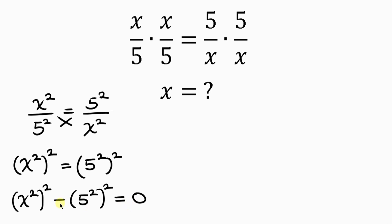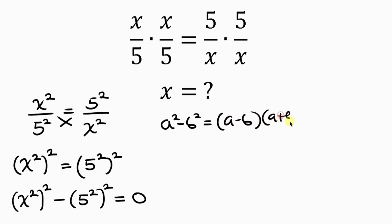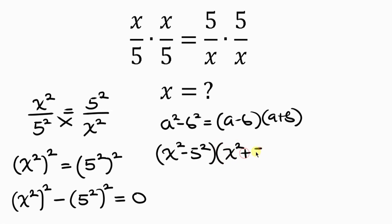Notice that we have an expression in difference of two squares. An expression such as a squared minus b squared is equal to a minus b times a plus b — this is a property. So we're going to express this in that form. This can be written as x squared minus 5 squared times x squared plus 5 squared.